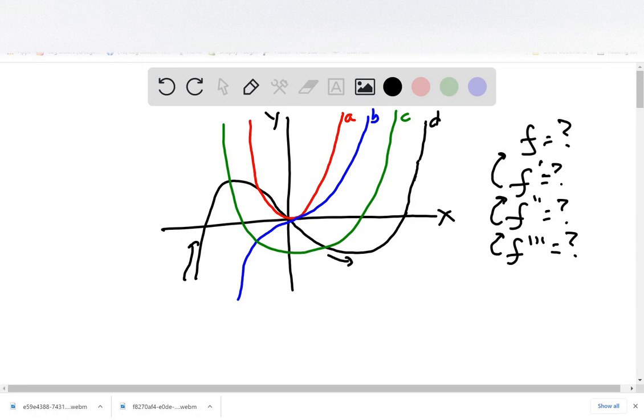And then the slope goes positive and gets greater and greater, which is what this green curve does. So we know that C is the derivative of D.